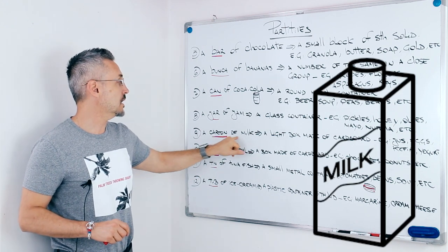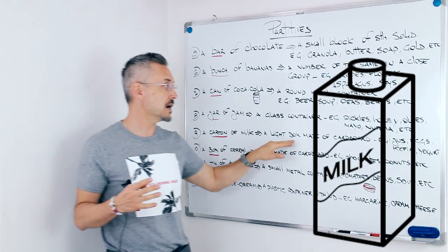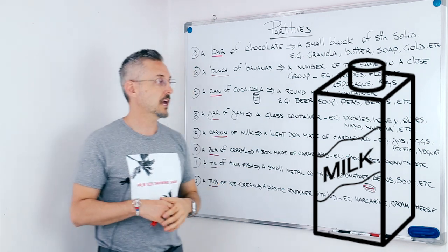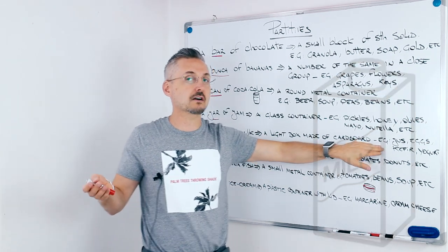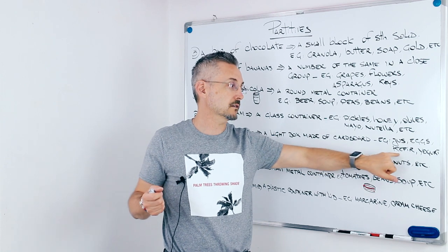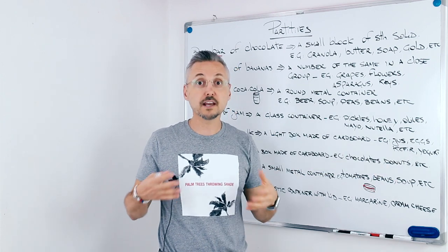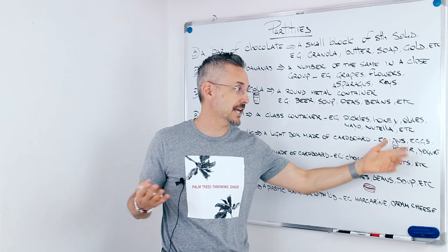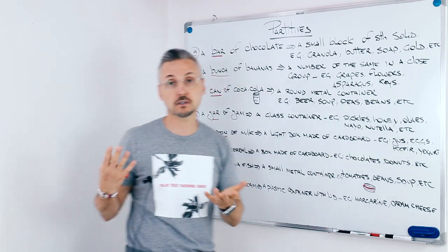The next one was a carton of milk. It's a light box made of cardboard. And we can say a carton of juice, a carton of kefir, or even a carton of eggs, a carton of yogurt.